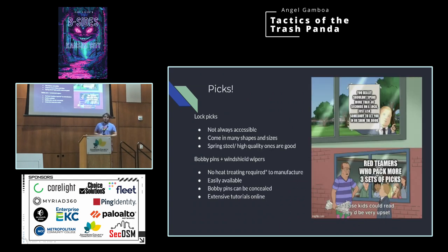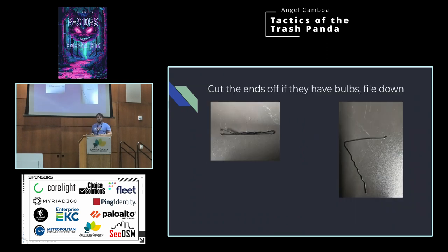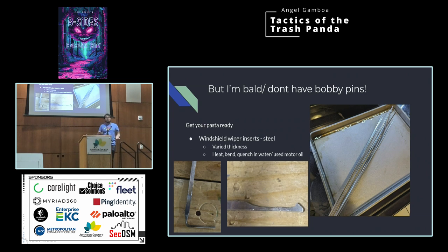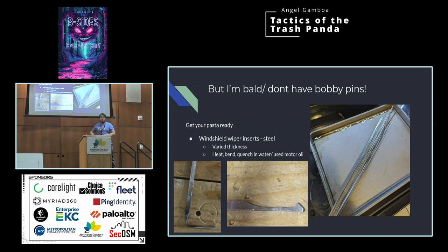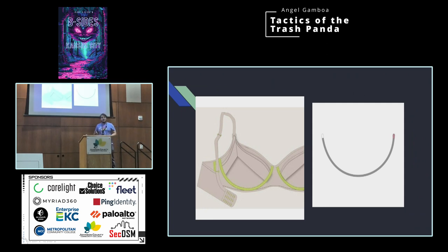Talking about picks — lock picks are not always accessible; they may be banned in certain countries or localities. Spring steel is where your high-quality ones come from. You can use bobby pins or windshield wipers — you just have to fashion them a bit. Take your bobby pins, cut the bobs off the end, file these down so you don't stab yourself — I've stabbed myself multiple times — and unfold them for picks. If you're bald and don't have any bobby pins, you can use windshield wiper inserts. I went to O'Reilly's and got these for a recommendation from a fan in South Dakota. You can take these inserts and heat treat them since they're normal steel, then fold or shave them into picks. I've got a tension wrench and a pick here. You want to heat it, bend it, and then quench it in water using motor oil. You can also use bras wire — it's pretty hefty stuff.